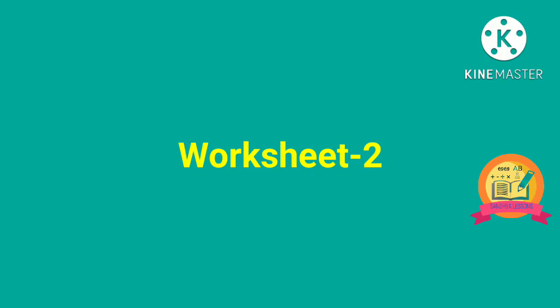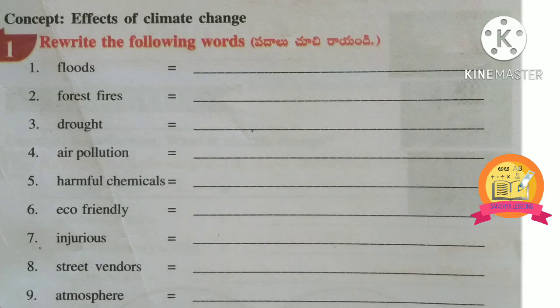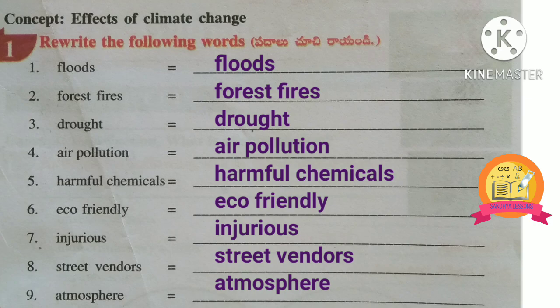Worksheet 2. First Roman: rewrite the following words. Floods, forest fires, drought, air pollution, harmful chemicals, eco-friendly, injurious, street vendors, atmosphere.